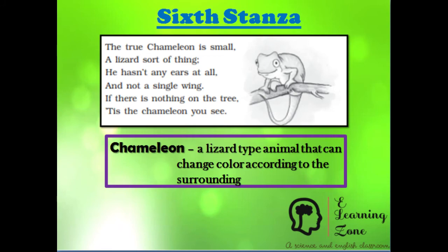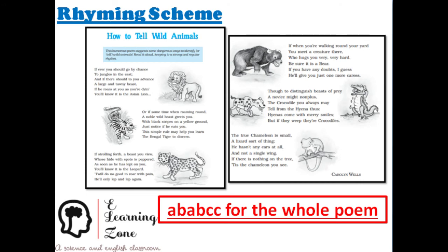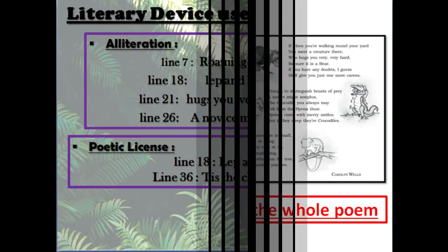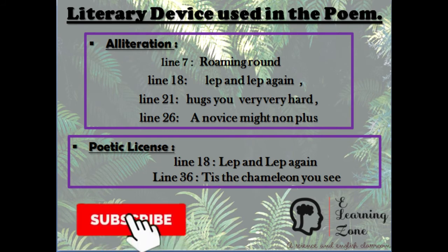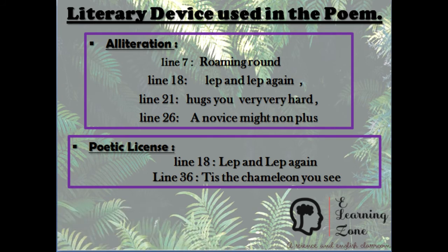The rhyming scheme is ABABCC — this is the rhyming scheme for the whole poem. The literary devices used include alliteration. In the poem, alliteration is used in phrases like 'roaming round,' 'leap and leap again,' 'hug you very very hard,' and 'a novice might non-plus.'